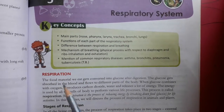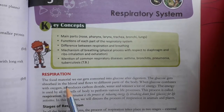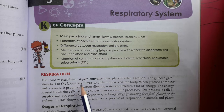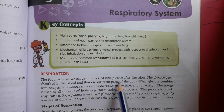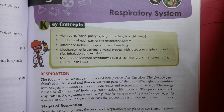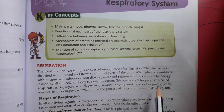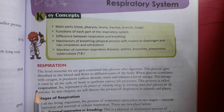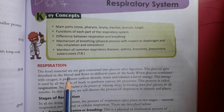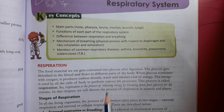Respiration. The food material we eat gets converted into glucose after digestion. The glucose is absorbed into the blood, and the blood carries it to different body parts.